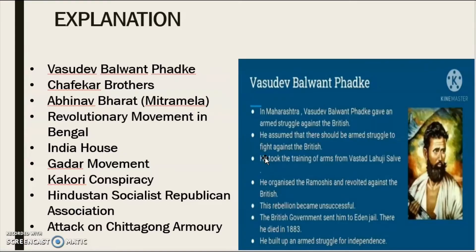Now we come to the explanation of the lesson. The revolt of 1857, which I showed you in the previous slide, actually failed. But what it did was inspire a lot of revolutionary activities undertaken by other people. In this lesson you will learn about them: Vasudev Balwan Fadke, Chafekar Brothers, Abhinav Bharat — that is Mitramela, revolutionary movement in Bengal, India House, Gadar movement, Kakori Conspiracy, Hindustan Socialist Republican Association, and lastly the attack on Chittagong Armory.